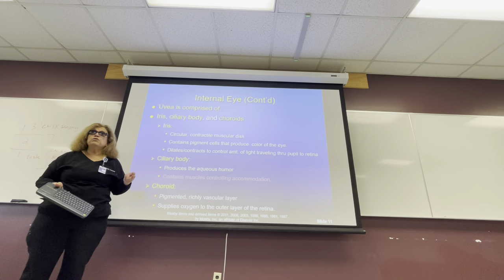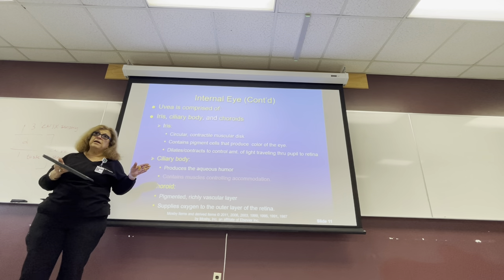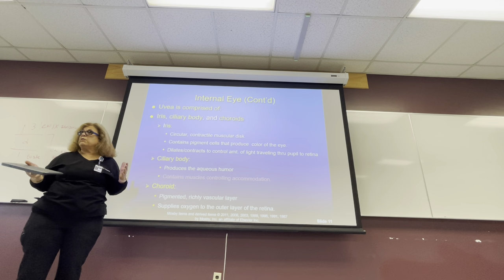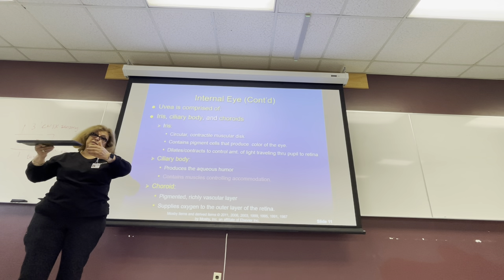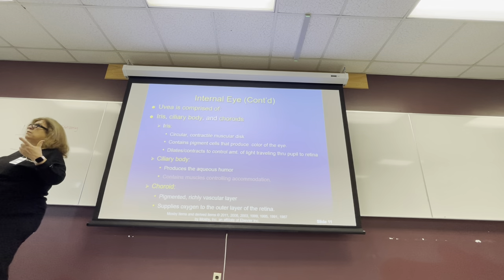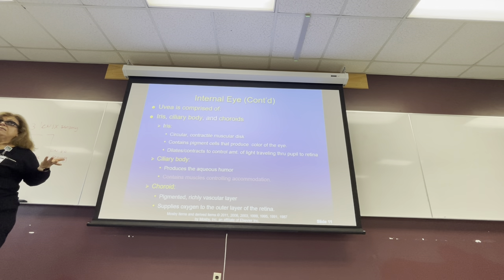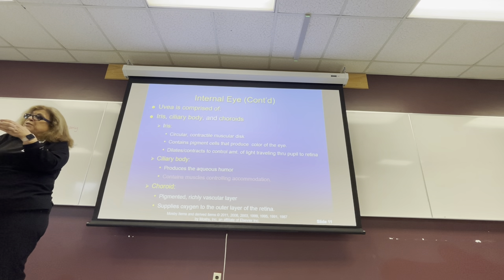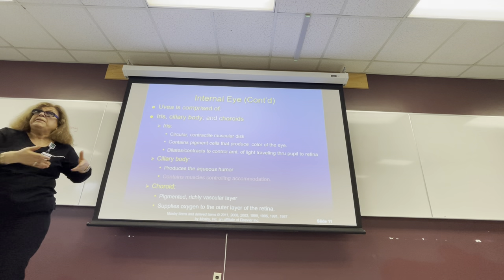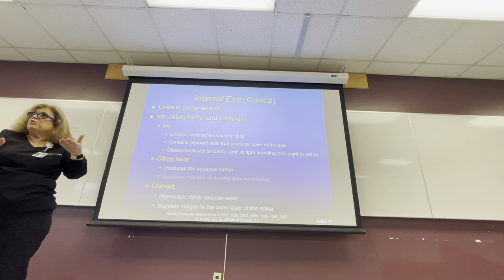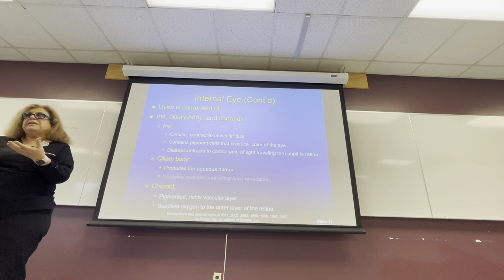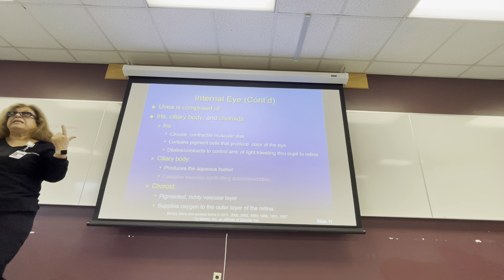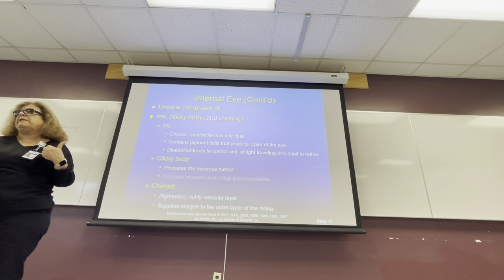The ciliary body contains muscle controlling accommodation. If you're in direct sunlight and you come inside a dark room, doesn't it take a minute for the eye to accommodate? Outside there was too much light, so the ciliary body closed the pupil so not a lot of light entered. When you come inside and it's dark, it takes a minute for the ciliary body to expand so more light can enter so you can see.